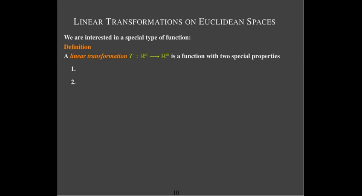So what makes linear transformations special? Two properties. The first one we call additivity, and it looks like a distributive property — we can distribute the action of T across the sum of vectors. The second one is called homogeneity, which means we can factor out a scalar in front of the action. For additivity, the image of the sum is the sum of the images. For homogeneity, the image of the scaled vector is the scaled image.